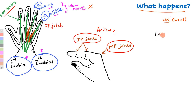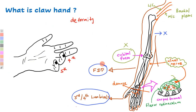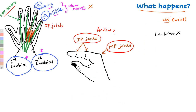Though the lumbricals become paralyzed, damage to the ulnar nerve at the wrist will not impair the nerve supply to the flexor digitorum profundus tendons, because the medial half of the flexor digitorum profundus muscle is supplied by the ulnar nerve at the forearm. So damage at the wrist will not affect its innervation, and the flexor digitorum profundus tendon will remain intact in both the ring finger and little finger.